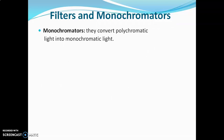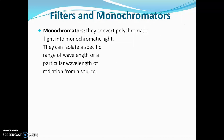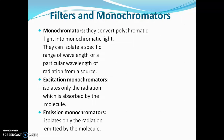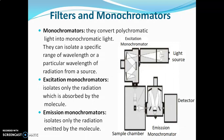Monochromators convert polychromatic light into monochromatic light. They can isolate a specific range of wavelengths or a particular wavelength from a source. The excitation monochromator isolates only the radiation absorbed by the molecule, while the emission monochromator isolates only the radiation emitted by the molecule. Monochromators are more sensitive and more effective than filters, and are used in expensive instruments like the spectrofluorometer.